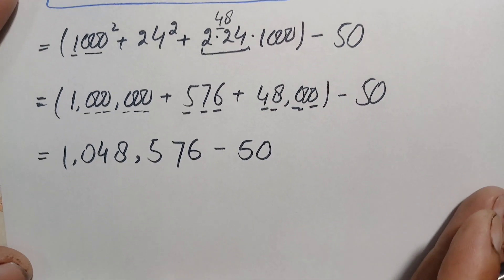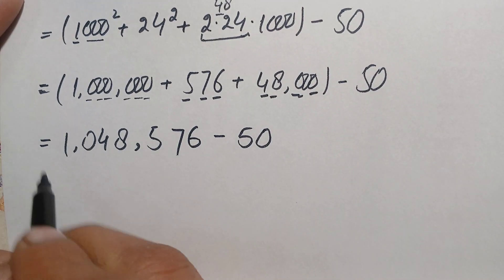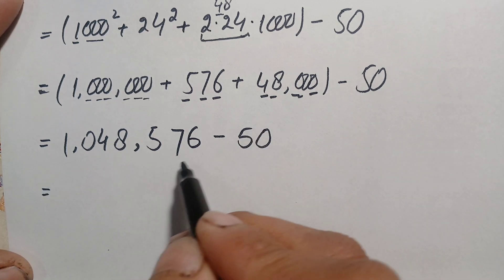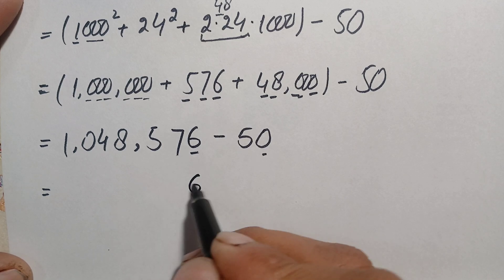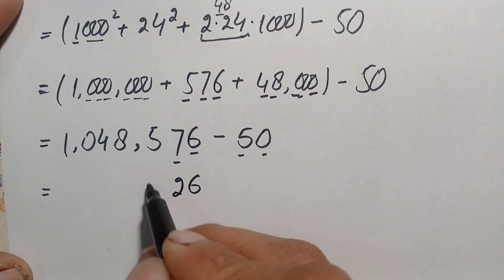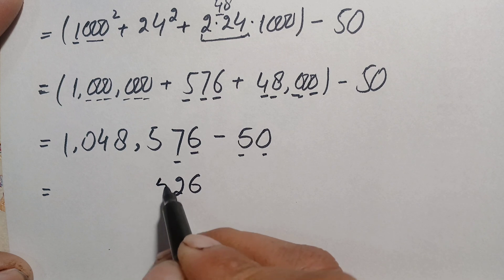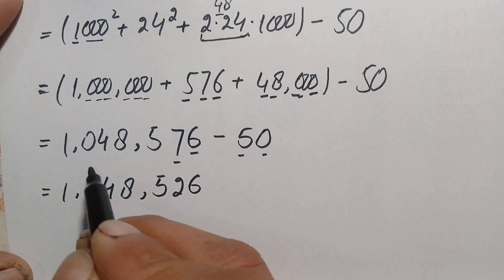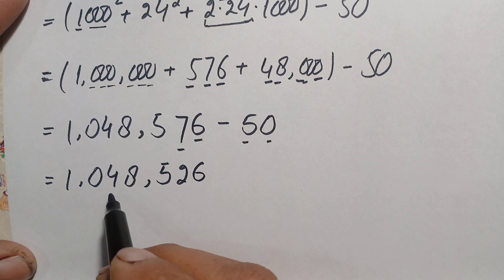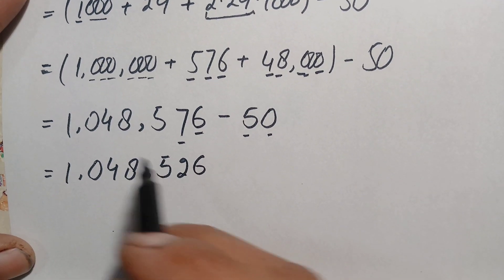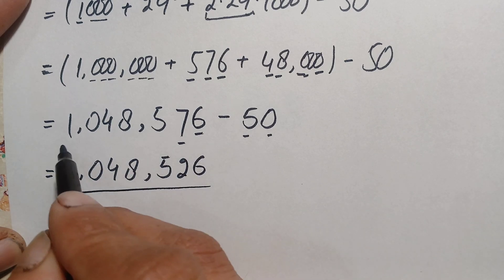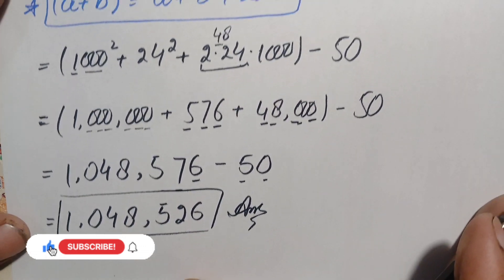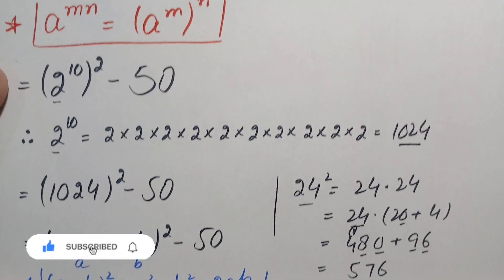Now we subtract 50 from 1,048,576. We subtract the last two digits: 6 minus 0 is 6, 7 minus 5 is 2. The remaining digits stay the same: 5, 8, 4, 0, 1. So the final answer is 1,048,526.